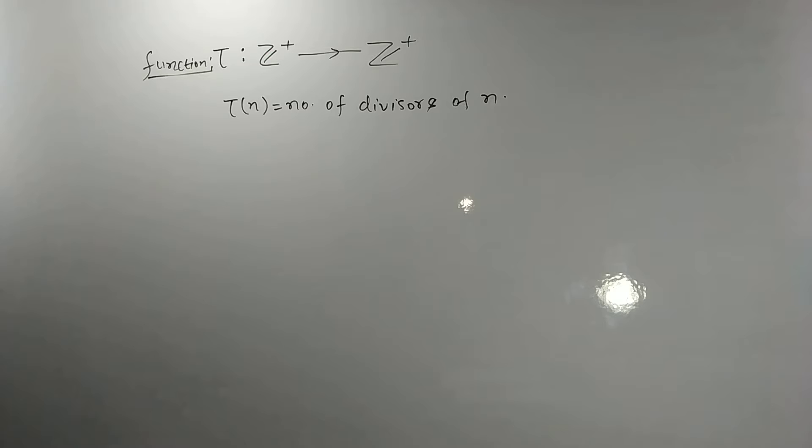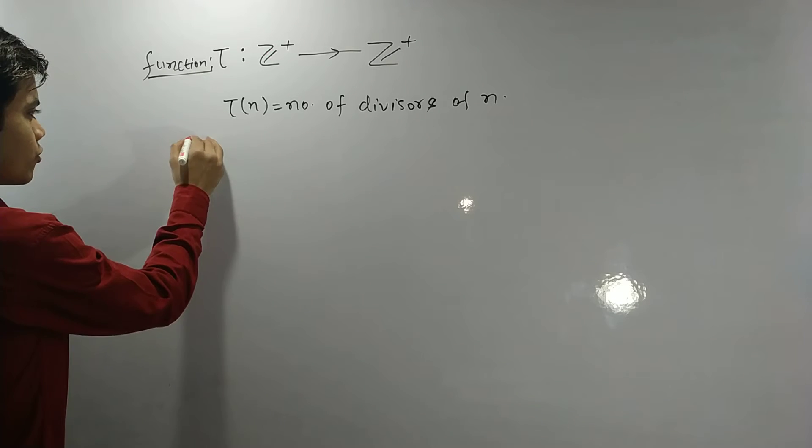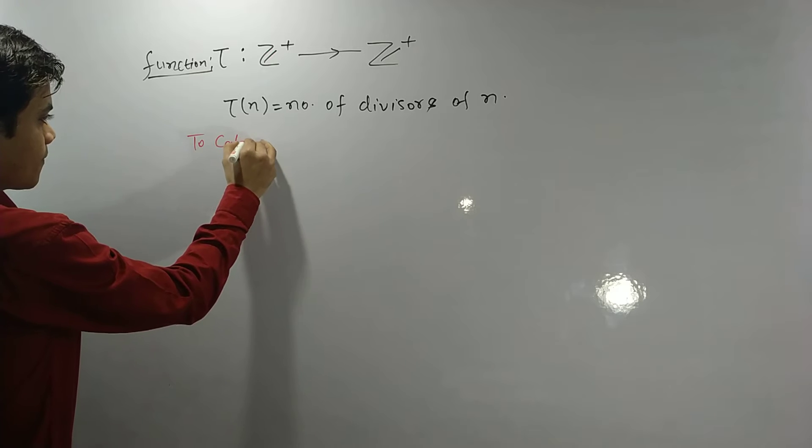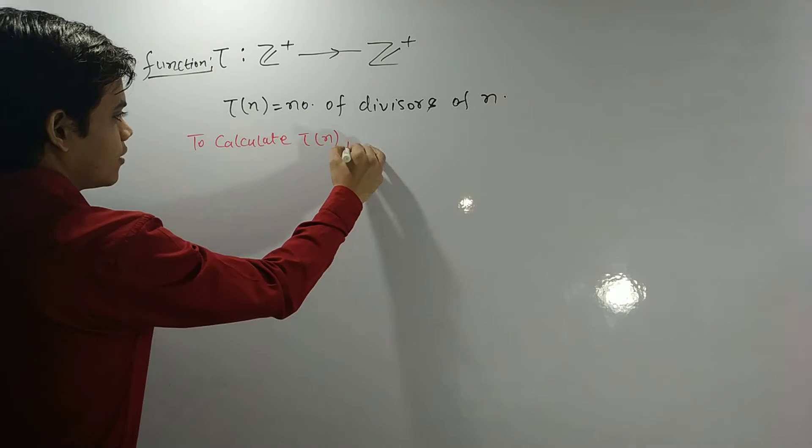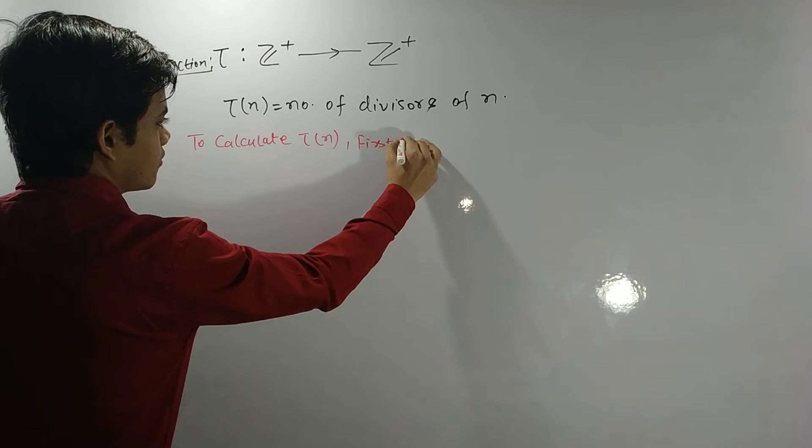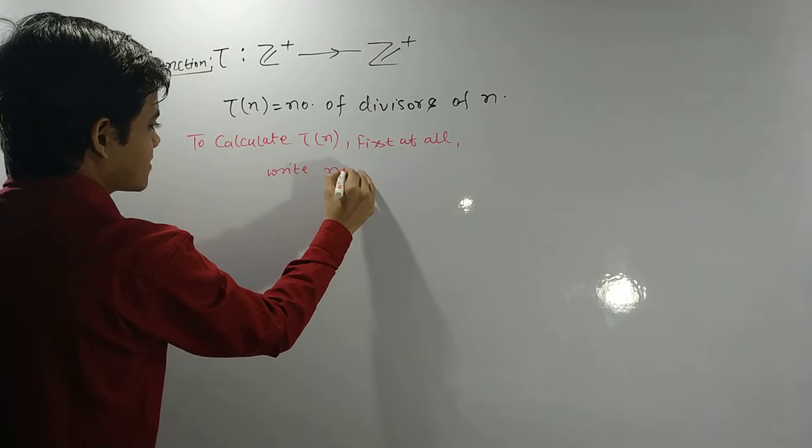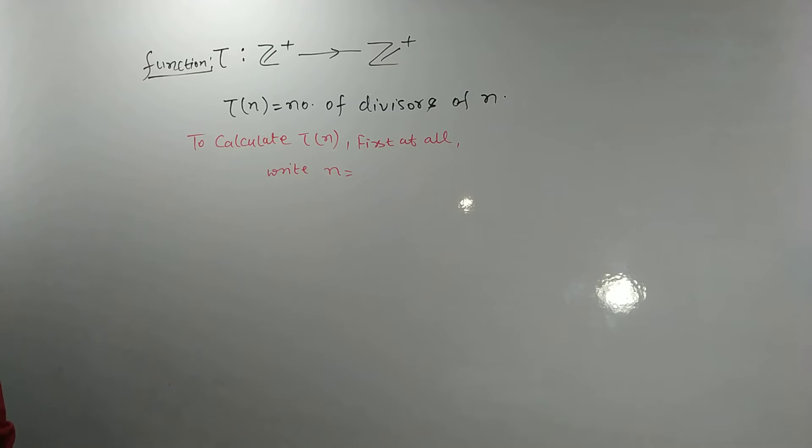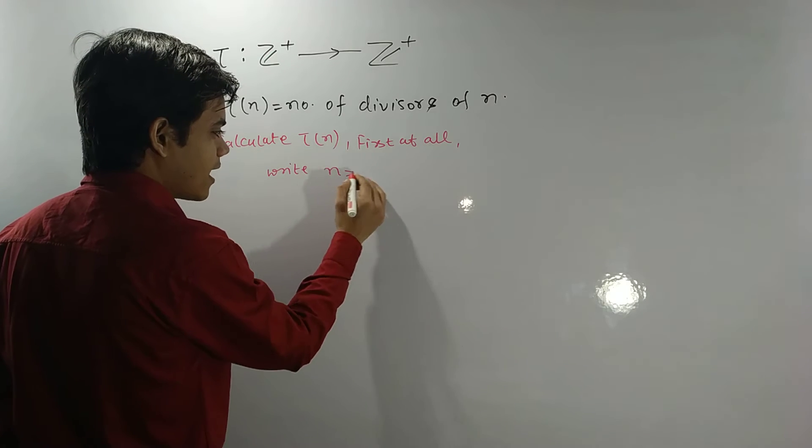So first of all, what should you do to calculate Tau(n)? First of all, write this n as the product of prime or power of primes. What does this mean? It means n equals p to the power a, times q to the power b, times r to the power c, and so on.